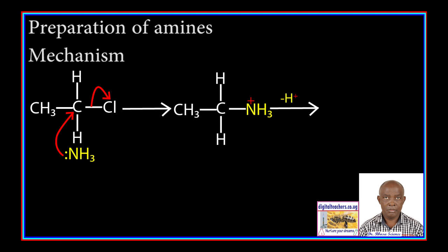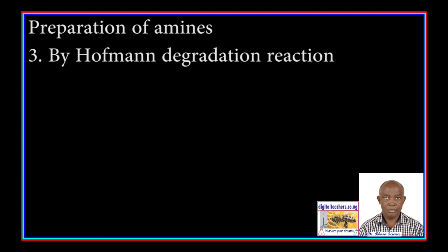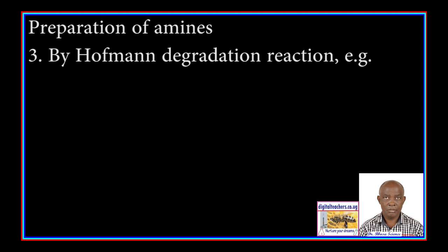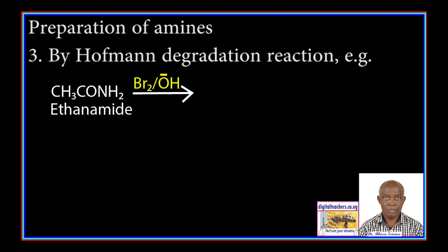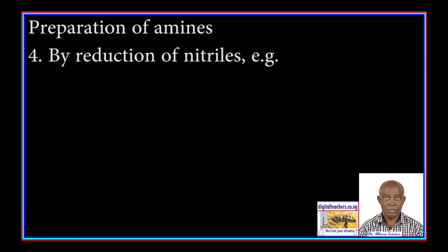Two: by reduction of nitroalkenes. For example, nitrobenzene is reduced by zinc and dilute hydrochloric acid to form phenylamine. Three: amides with no substituents on the nitrogen atom react with a solution of bromine or chlorine in sodium hydroxide to yield amines. For example, acetamide reacts with bromine in the presence of sodium hydroxide to form ethylamine. This reaction reduces the chain by one carbon atom.